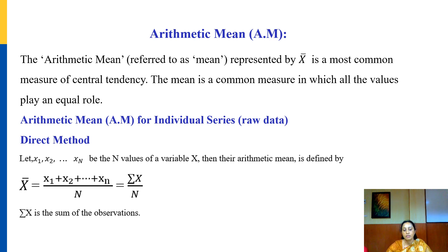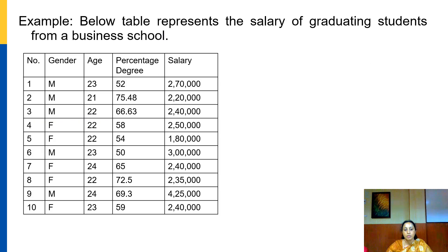When we have raw data x1, x2, ..., xn, and n is the number of data points, we define the arithmetic mean as: x̄ = (sum of all data) / (number of data), that is, x̄ = Σx / n.